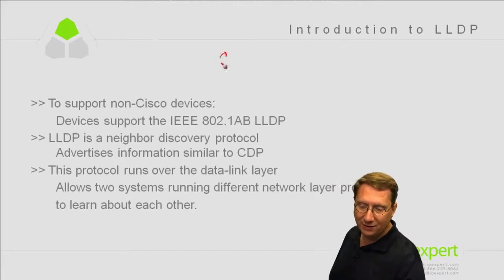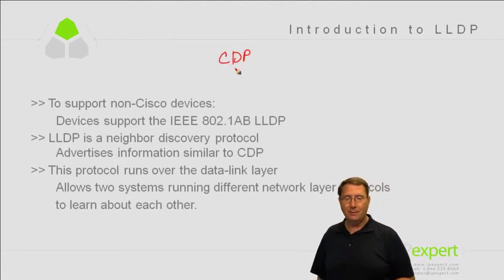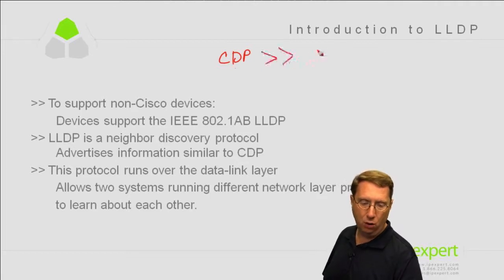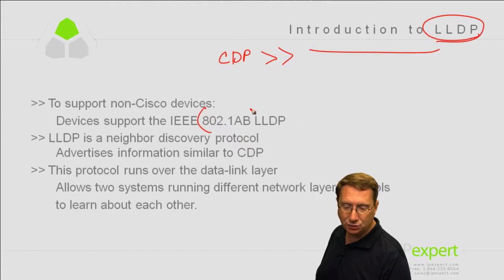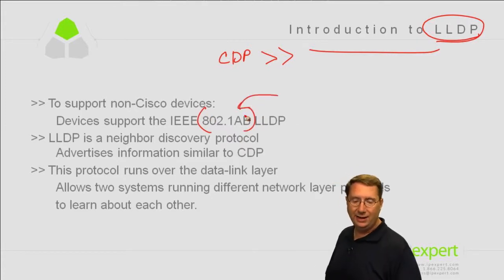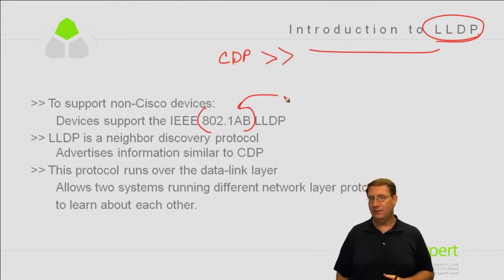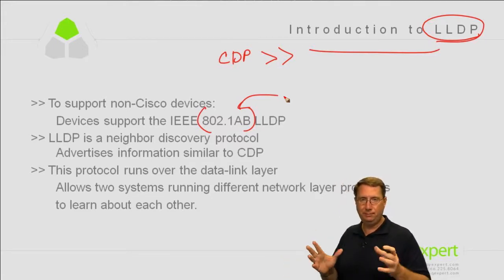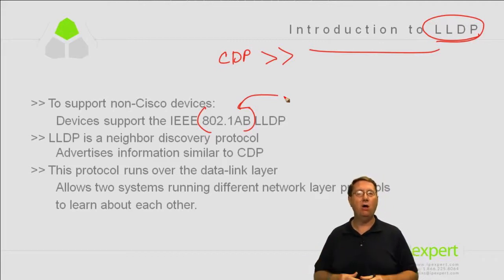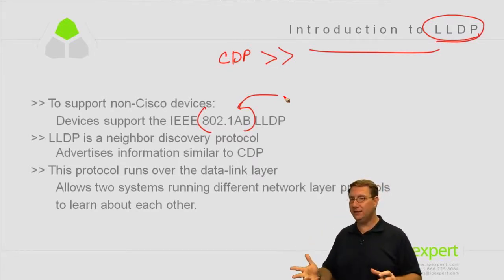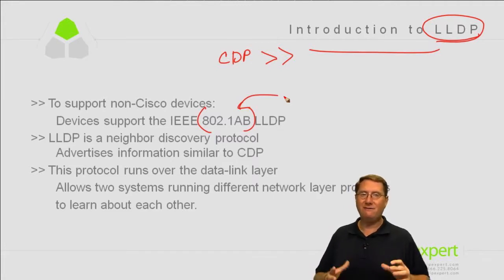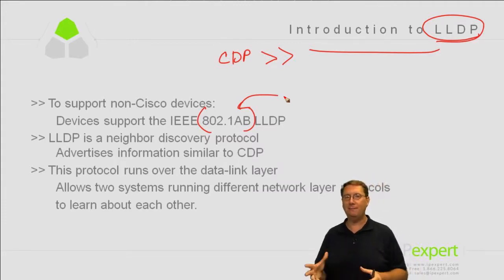The whole purpose of embracing LLDP was so that Cisco devices could interoperate with other vendor-manufactured components — that includes telephones, wireless access points, and different hardware configurations. Cisco had CDP, the Cisco Discovery Protocol, and the industry standards body created their own version called LLDP, Link Layer Discovery Protocol. Since it's an IEEE standards body design, it's assigned its own value: 802.1AB. The industry bought into the TLV concept hook, line, and sinker, recognizing just how extensible and expandable that makes a protocol.